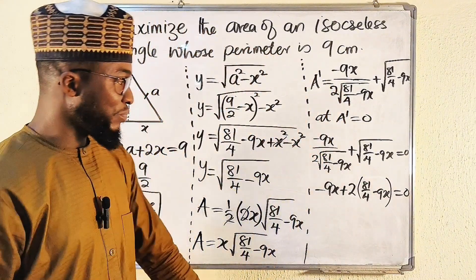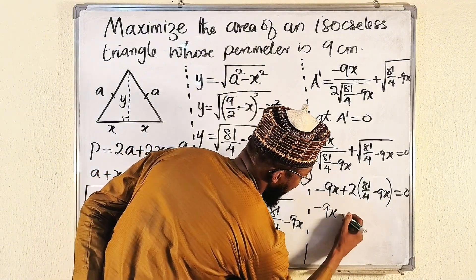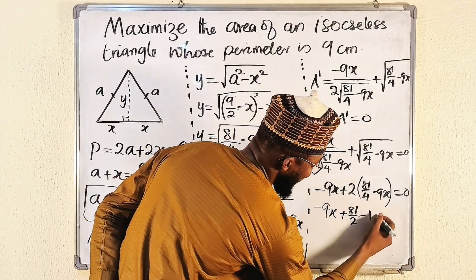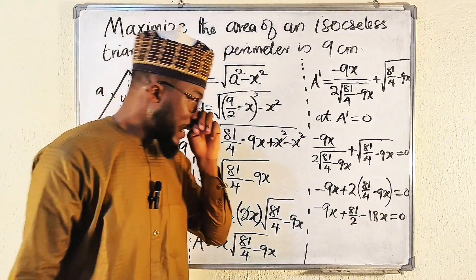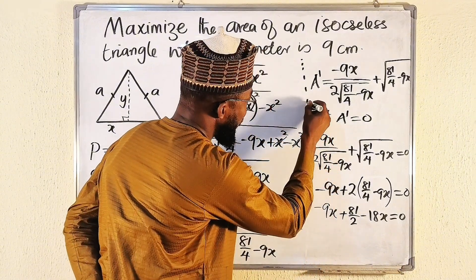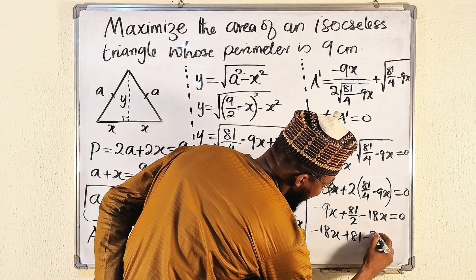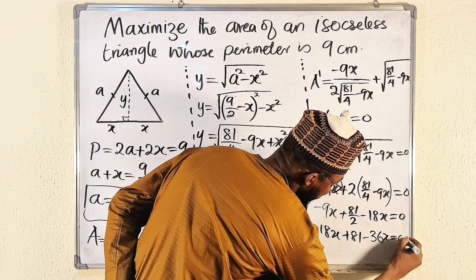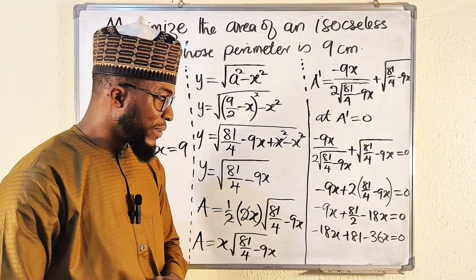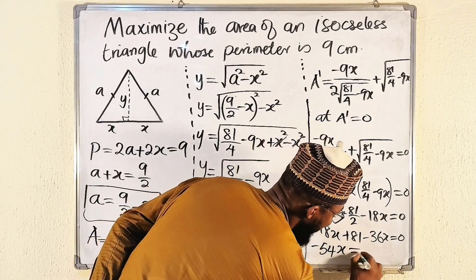Expanding: 2 goes into 4 exactly twice, giving 81/2. So we have −9x + 81/2 − 18x = 0, which gives −27x + 81/2 = 0. Multiplying every term by 2: −54x + 81 = 0. Taking 81 to the other side: −54x = −81, so 54x = 81.